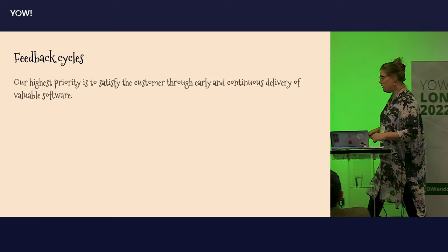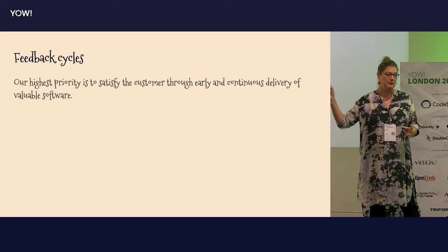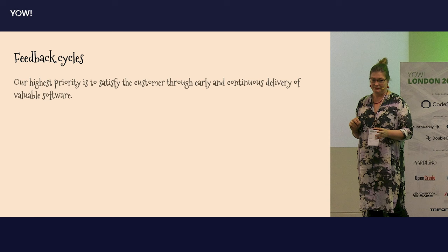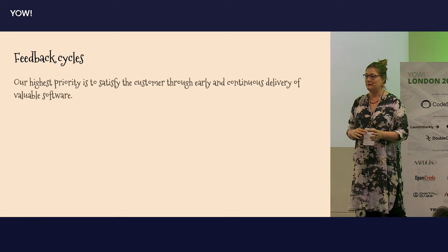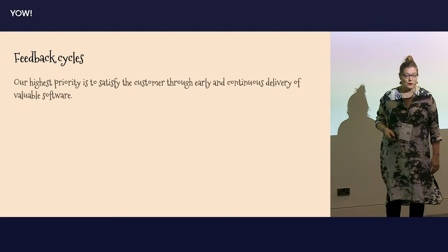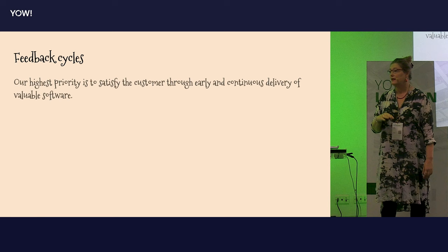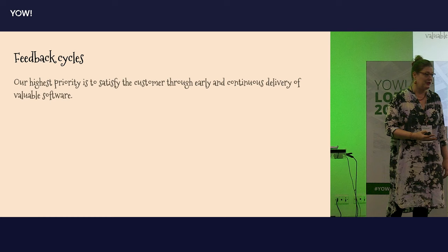One of the problems they had was that they never talked to their customers, because the customers were in-house customers. They were doing the IT for the university, and their customers were the other people employed in the other departments. And they hated each other. All the other people who were using the software from the IT department hated the IT department — they thought they were arrogant, they didn't listen, and they never did what they wanted. The IT department on the other side thought that all these users were completely stupid — they didn't understand anything of the brilliant software they'd done, and they were not able to explain exactly what they wanted.